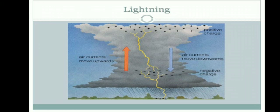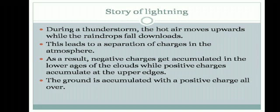Or else the negative charges in the lower portion of the cloud and the positive charges on the ground interact, and due to these charges it causes lightning. During a thunderstorm, the hot air moves upwards and the raindrops fall downwards, which leads to the separation of charges in the atmosphere. As a result, negative charges get accumulated in the lower part of the clouds while positive charges accumulate at the upper part of the clouds.